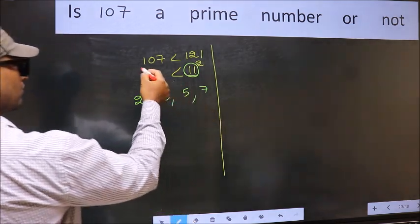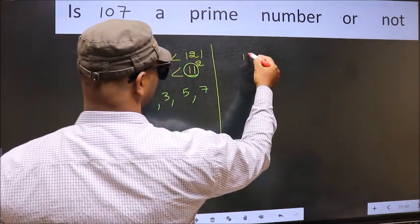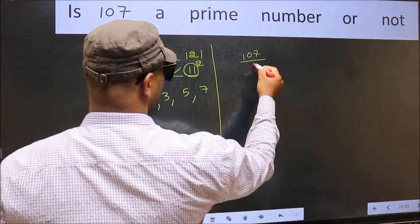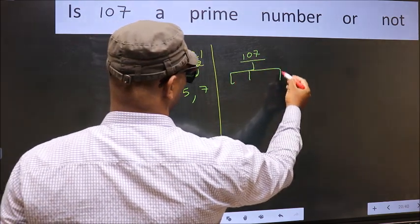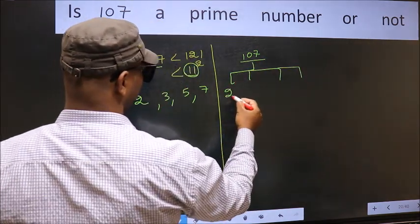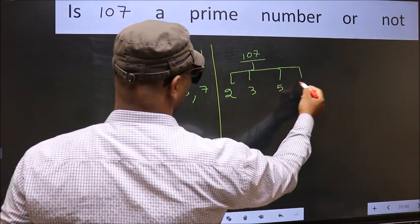Now for the given number, we should check divisibility by 2, 3, 5, and 7.